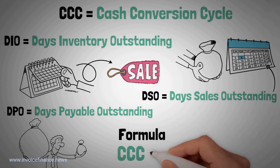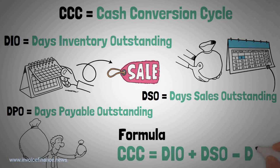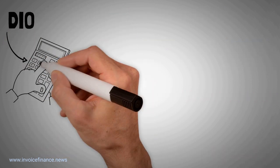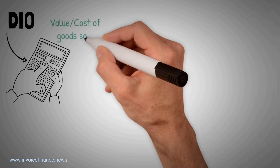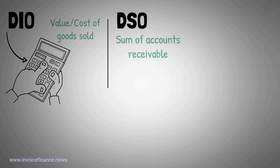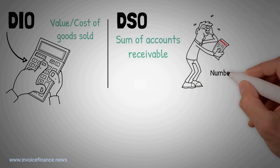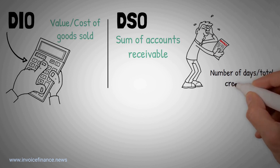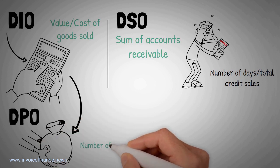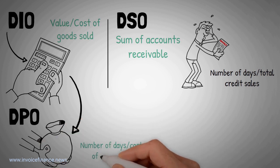CCC equals DIO plus DSO minus DPO. DIO is calculated by average inventory value divided by cost of goods sold, multiplied by number of days. DSO is calculated by the sum of accounts receivable (unpaid invoices from customers) multiplied by number of days, divided by total credit sales. DPO is calculated by the sum of accounts payable — what the company owes — multiplied by number of days, divided by cost of goods sold.